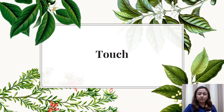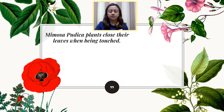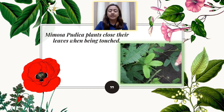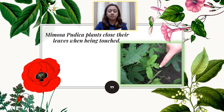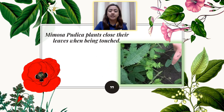Plants also respond to touch. For example, if you touch the leaves, the petals, or any parts of the plant, it might close or open. One example of a plant that responds to touch is Mimosa pudica, or the touch-me-not plant. This plant closes its leaves when being touched.